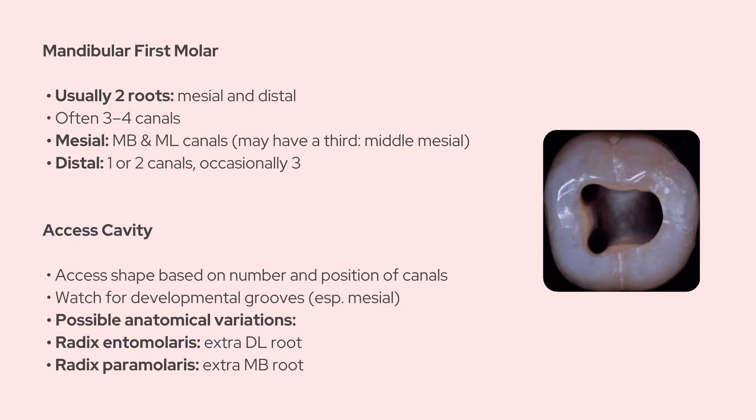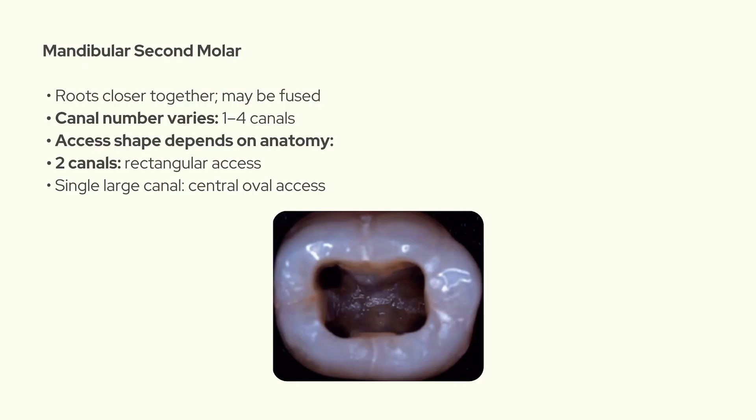As for the mandibular second molar, it's a bit smaller and more symmetric compared to the first molar. The roots are usually closer together and may even be fused. This tooth might have anywhere from one to four canals. When there are just two canals — one in each root — the access shape is usually more rectangular. But if there's a single root with one large canal, your access is more centrally placed and oval shaped.